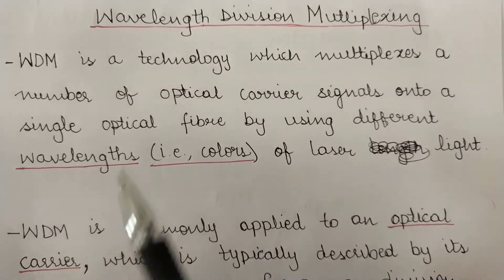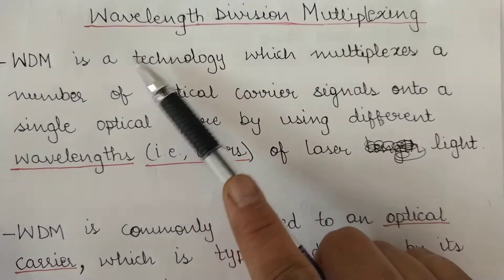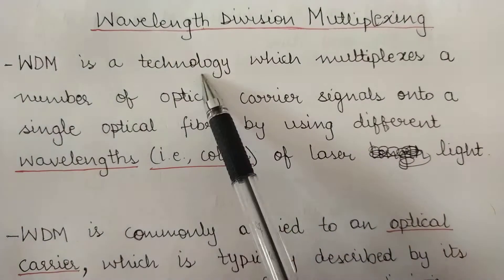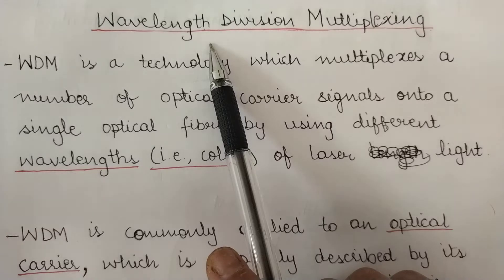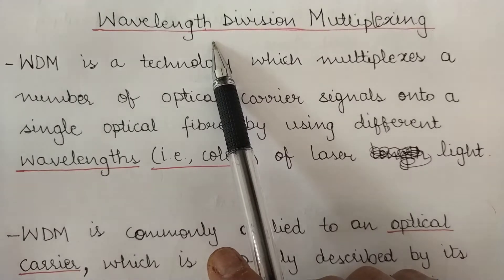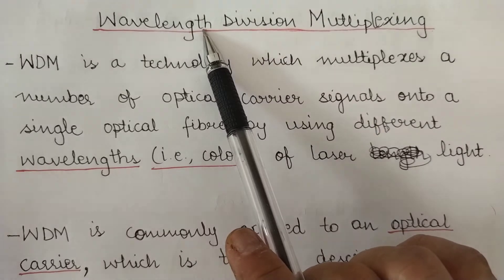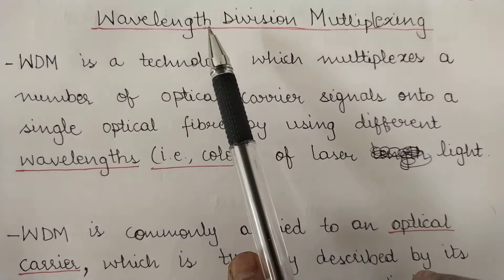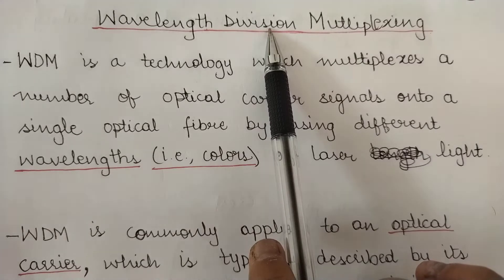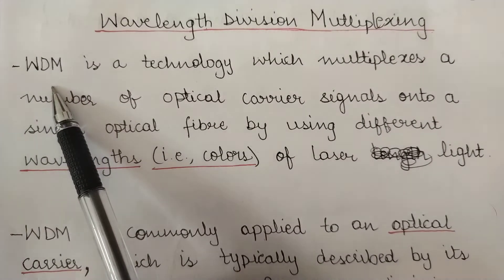Today we are going to study Wavelength Division Multiplexing, a multiplexing technique where the wavelength is divided. We saw in Frequency Division Multiplexing that different channels were allocated different frequencies, so they didn't interfere. In Wavelength Division Multiplexing, different channels are assigned different wavelengths and combined together, since they have different wavelengths they would not interfere with each other.